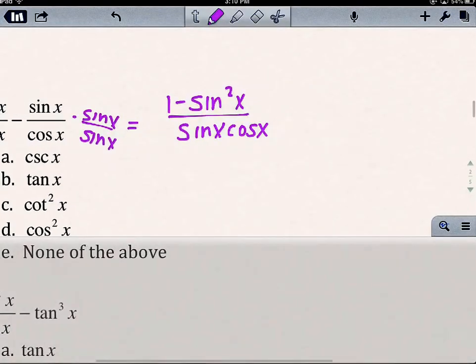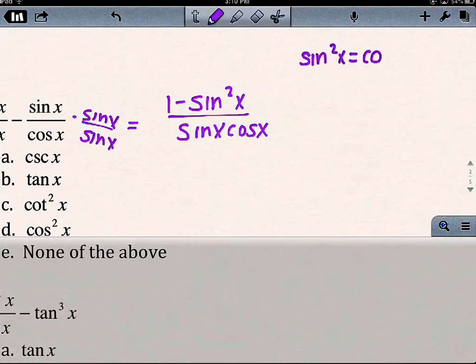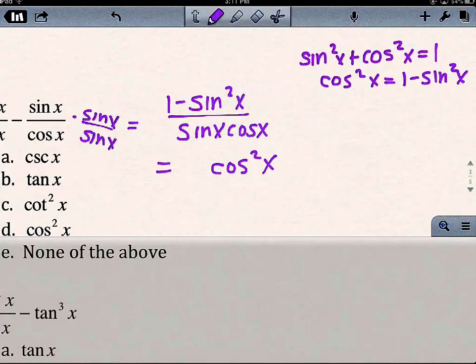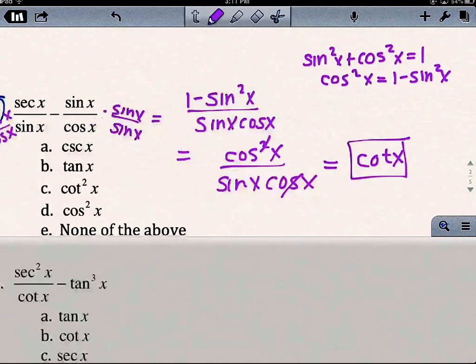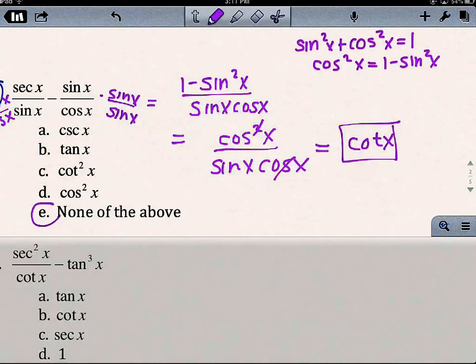1 - sin²x should look familiar to us, because I know sin²x + cos²x = 1. So I can say cos²x = 1 - sin²x. So I'm going to write this as cos²x over sin·cos. My cos² and my cos can cancel out, and I know cos/sin = cot. Now if I look at my options, cotangent is not on there, so that would be e, none of the above.